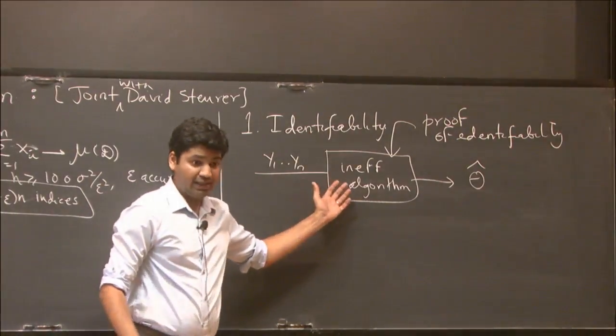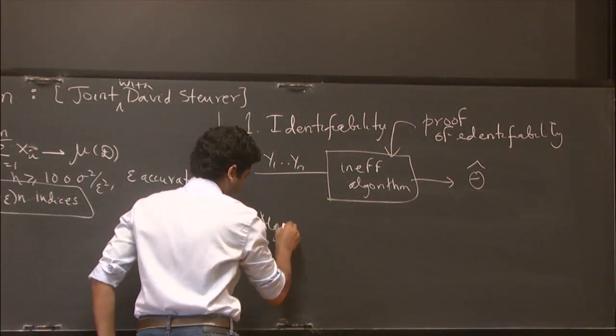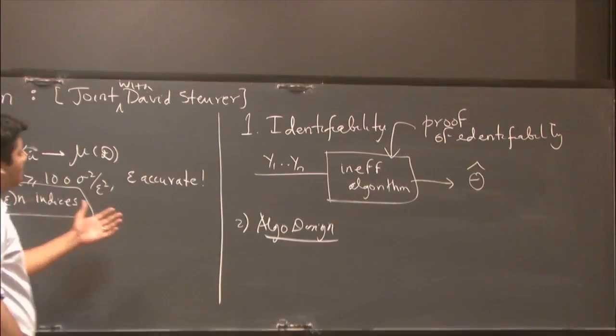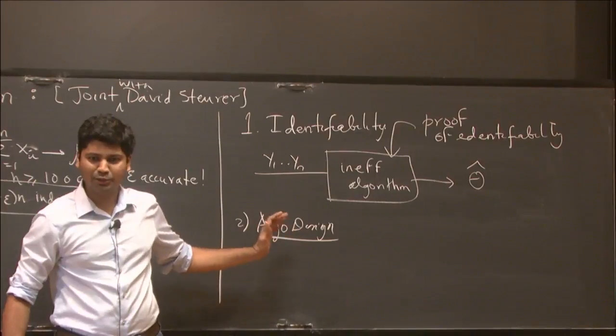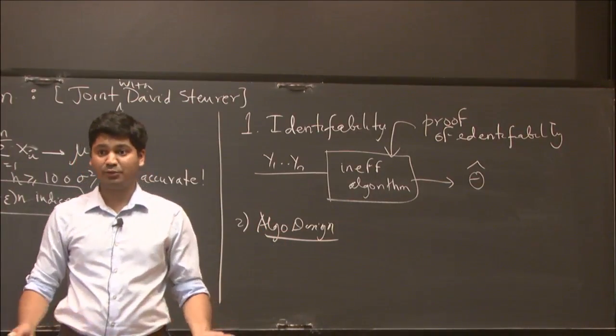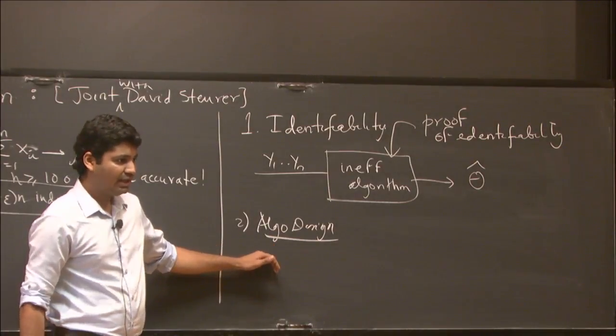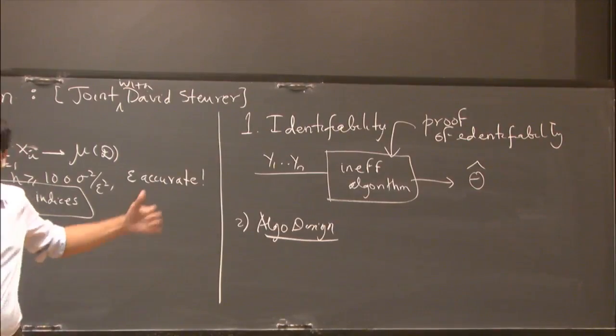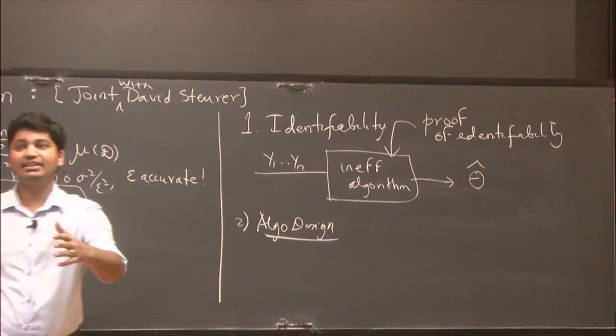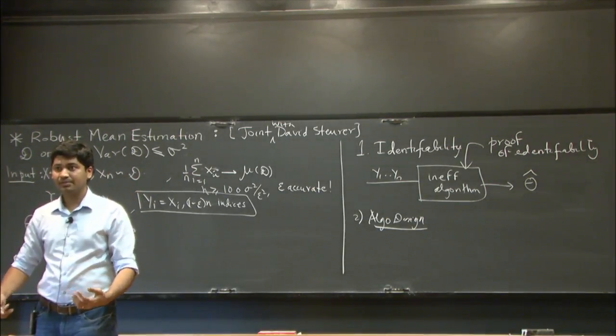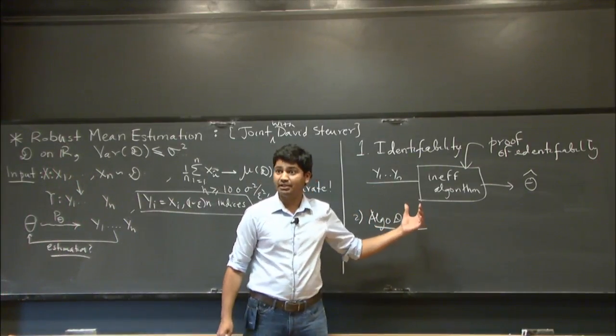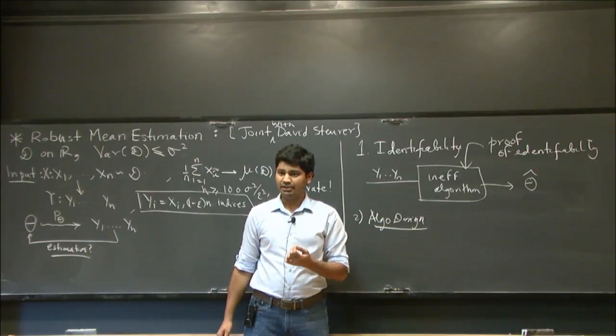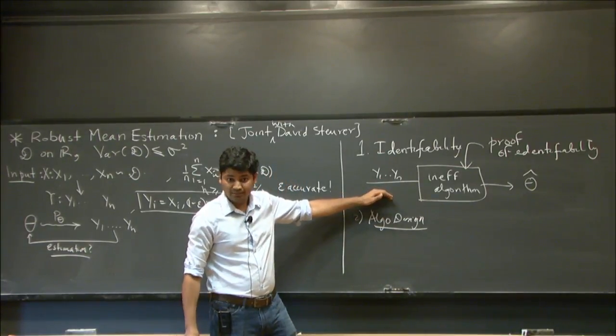Identifiability establishes that the sample I see has enough information to uniquely pin down the parameter up to some tiny error. This step establishes the sample complexity of the problem. In general, it does not give you an efficient algorithm. I'm going to depict this pictorially: the data goes into this box, it only gives you an inefficient algorithm in general, and out comes an estimate of the parameters we care about. The engine that makes this work is a proof, a proof that a small sample is enough to uniquely identify the parameter. In general, this only gives you an inefficient algorithm. So you have to do a next step, which is algorithm design. It turns out that in practice for many problems, including the one we looked at, the second step is more or less independent of the first one. The first tells us this is a good problem to look at, but then we have to work from scratch again to get to an efficient algorithm.